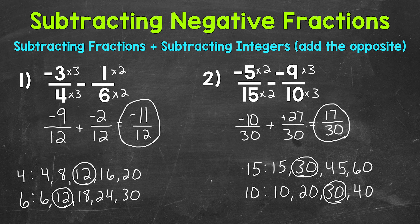There is one more thing I want to mention about subtracting a negative. In number two, we started with negative five fifteenths and subtracted negative nine tenths, and ended up with 17 thirtieths — we increased in value even though this was a subtraction problem. That's because when you subtract a negative, you actually increase in value. You can think of it as subtracting or taking away debt, which is a good, positive thing. When you subtract a negative, you are going to increase in value — keep that in mind when working with negatives.